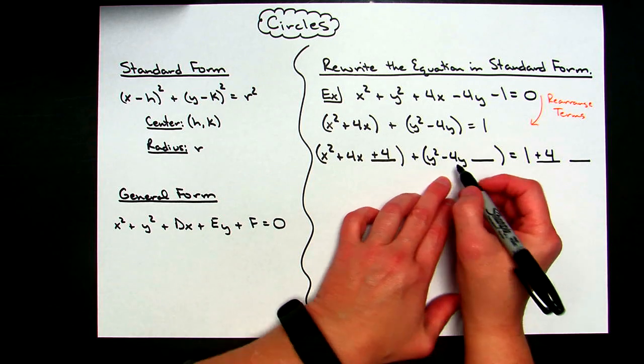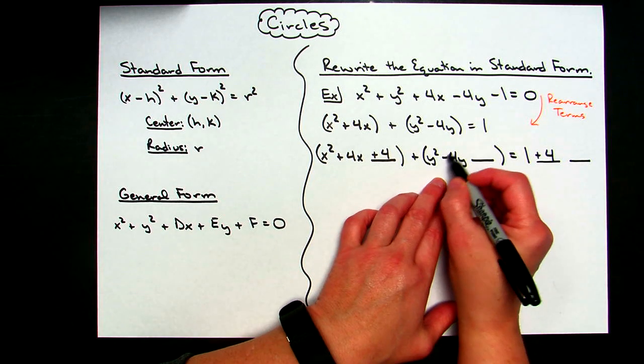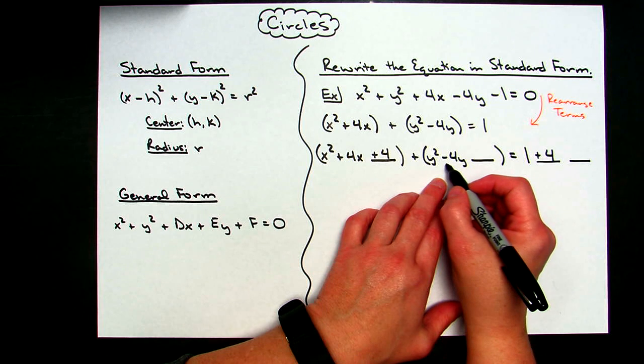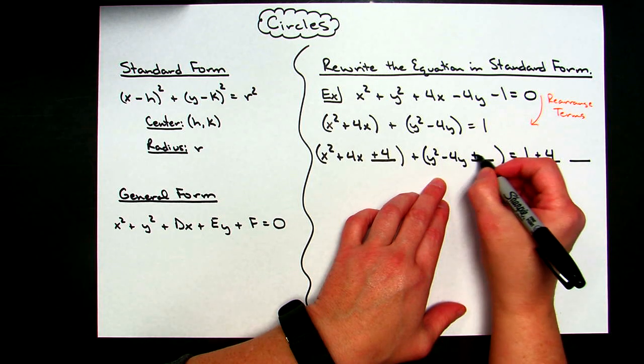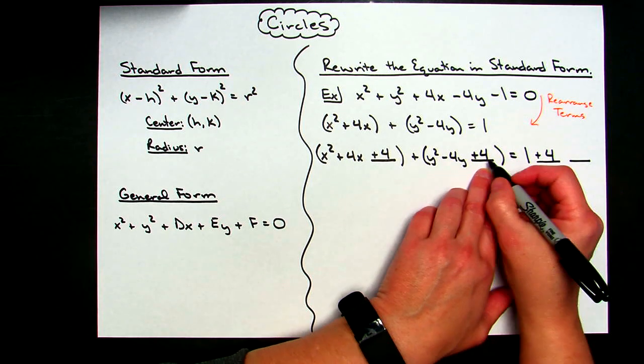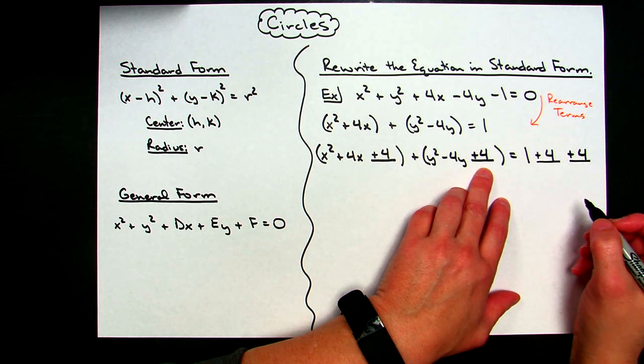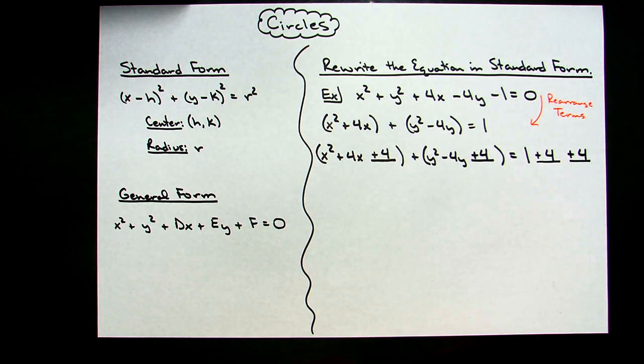On this one, again, half of the negative 4 would be a negative 2 squared. It's going to be 4 again. So I'm going to put a plus 4 right there. And over here then, in this blank, plus 4 to keep my equations balanced. That's me completing the square.